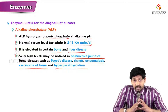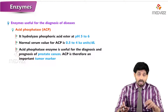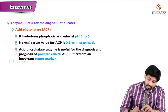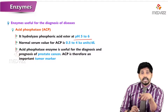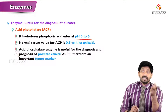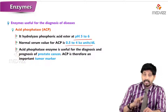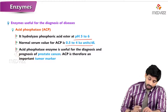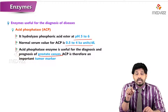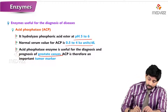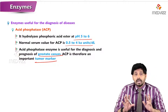Alkaline phosphatase levels are increased in obstructive jaundice and bone diseases such as Paget's disease, rickets, osteomalacia, carcinoma of bone, and hyperparathyroidism. Acid phosphatase, by contrast, hydrolyzes phosphoric acid at acidic pH, with a normal serum value of 0.5 to 2 King-Armstrong units per deciliter. Acid phosphatase is an important tumor marker useful for diagnosis and prognosis of prostate cancer in males.